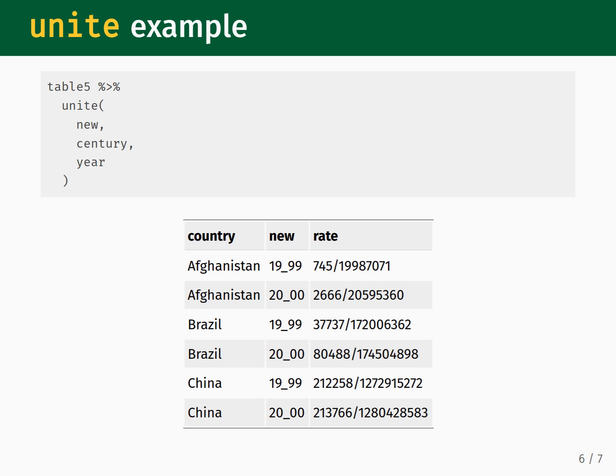Here is the code that implements the reshaping process we just saw in the schematic. We take Table 5 and pipe it into Unite. For the first input we write 'new', which will be the name of our final combined column. Next, we give the column names Century and Year as the second and third inputs — these are the names of the two columns in Table 5 that we wish to combine. We execute the command and end up with the following table. This is close to but not exactly what we wanted. Notice that the years under the new column have an underscore between the first two and last two digits of the full year.